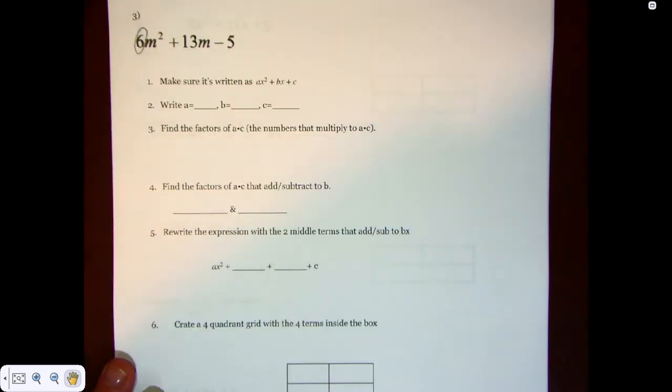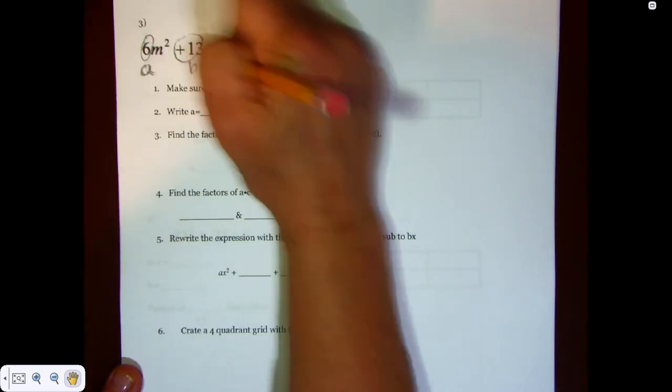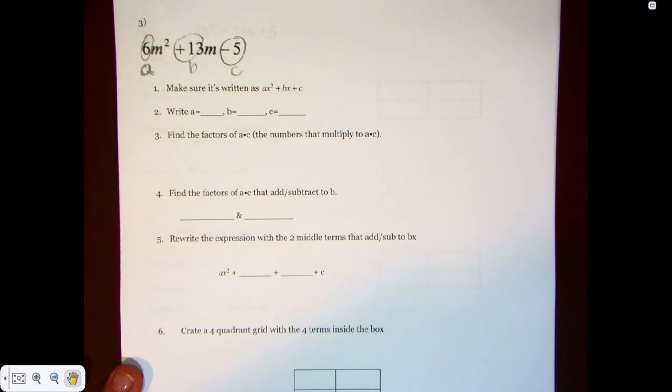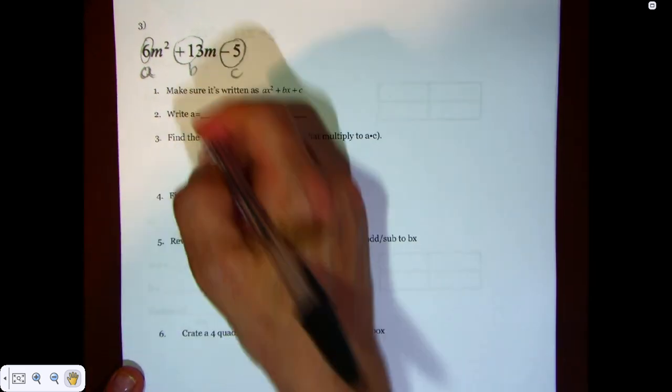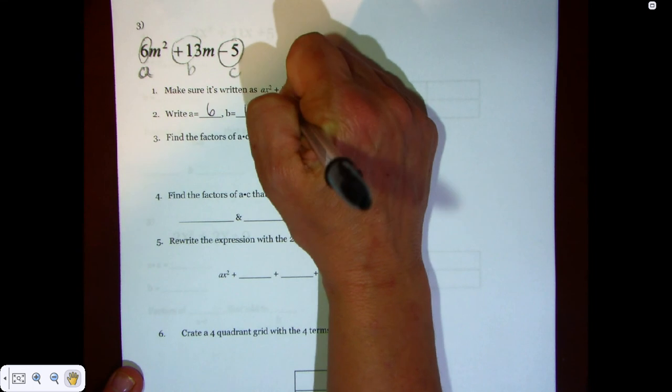So let's start off. At this point we know negative 6 is A, positive 13 is B, and negative 5 is C. So let's call this A, B, and C, and we are going to write it in as negative 6, 13, and negative 5.